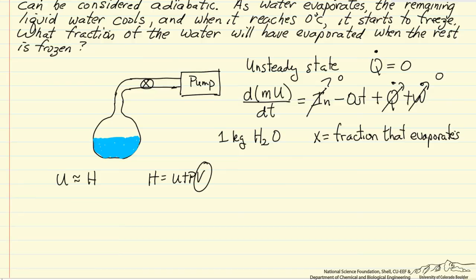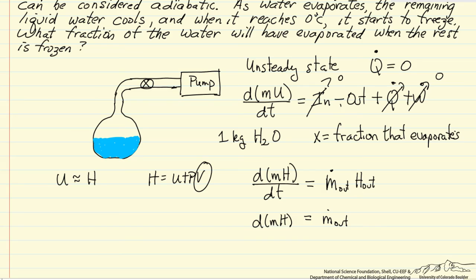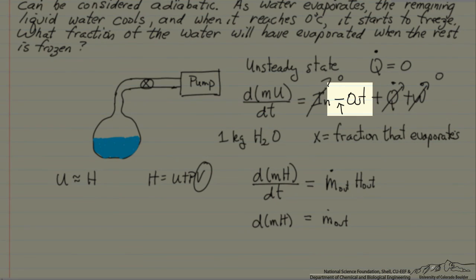Because u equals h, the energy balance is the derivative of mass times enthalpy per kilogram with respect to time, where both mass and the enthalpy change. This is equal to the mass flow rate out times the enthalpy of that vapor leaving the system. So I can move the derivative sign to the other side, and also keep in mind the negative sign.